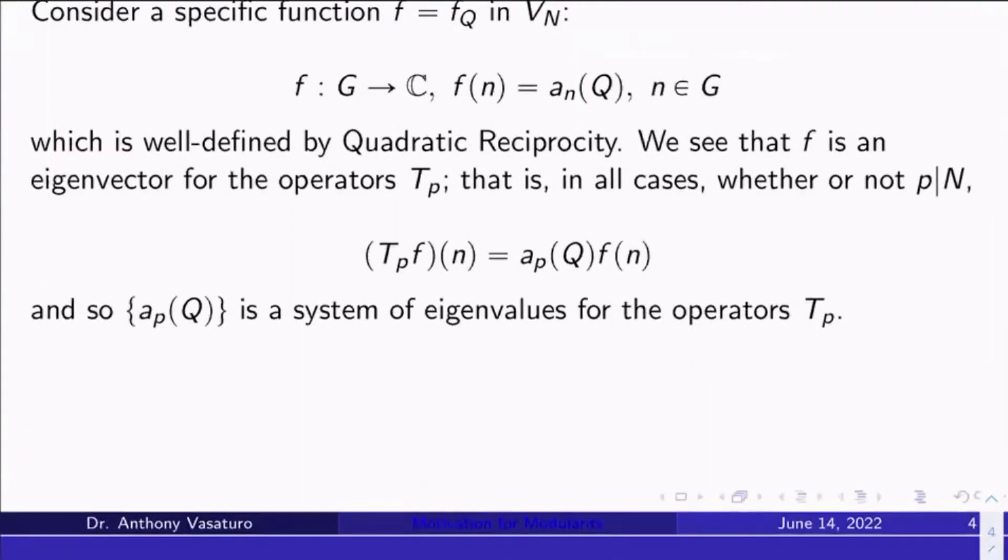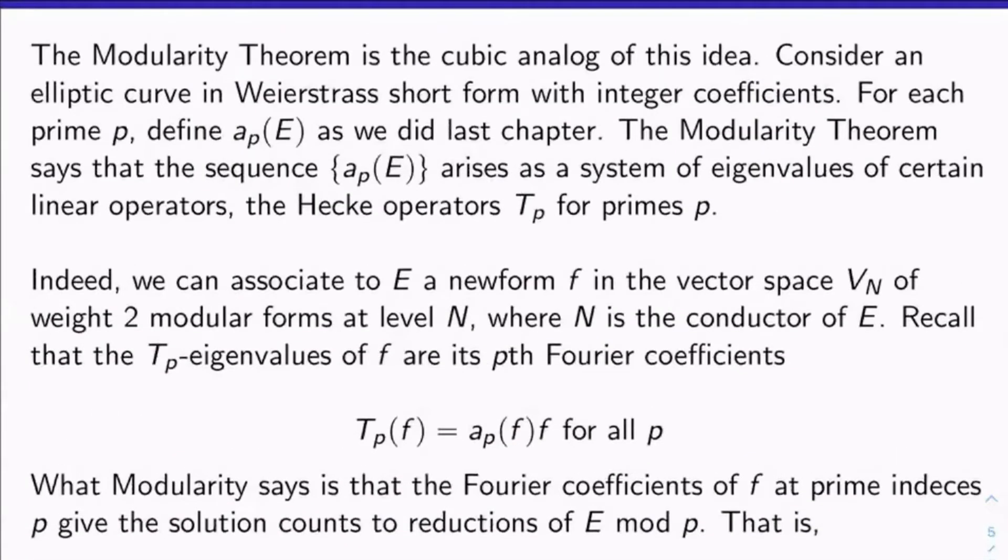That's exactly what we discovered in the quadratic situation up top. We discovered that solution counts to quadratics, simple quadratics, are eigenvalues for special operators at each prime p. That's exactly what's going on. It's the exact same thing. So think of modularity as the cubic analog of quadratic reciprocity, I guess, if you want to be really cute and vague and mysterious about it when you're telling this to people. But okay, next time we will begin diving into just an overview of the proof of modularity in the semi-stable case. Thanks for watching.